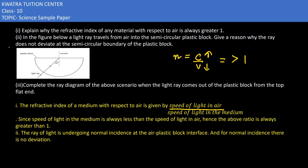Secondly, it says in the given figure below, a light ray travels from air into the semicircular plastic block. Give a reason why the ray does not deviate at the semicircular boundary of the plastic block.